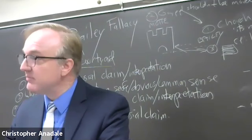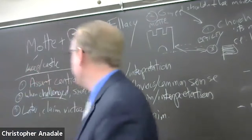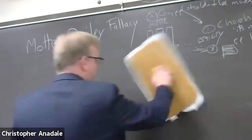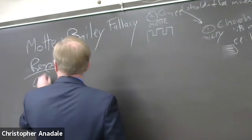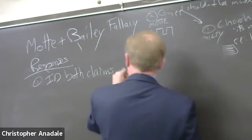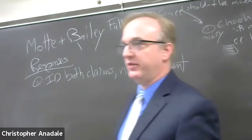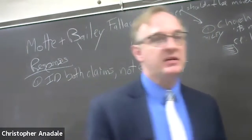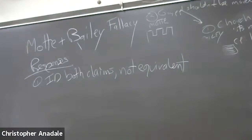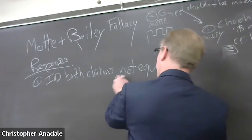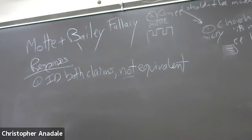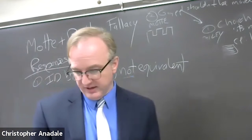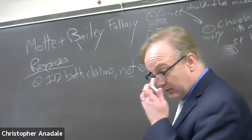A couple of tactics for responding to a Mott and Bailey fallacy. One possible response — this works with many fallacies — is to simply identify the two claims and note specifically how they are not equivalent to each other. 'At first you said X and now you're saying Y. Are you going to come back and say, actually, what about X?' Making it clear that there are two claims being shuffled between is one tactic.